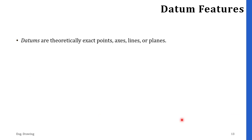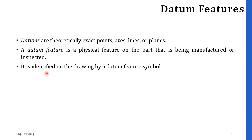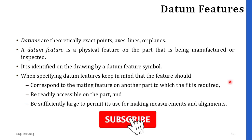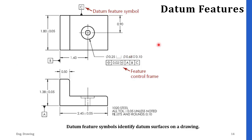Datums are theoretically exact points, axis lines, or planes. A datum feature is a physical feature on the part that is being manufactured or inspected. It is identified on the drawing by a datum feature symbol. When specifying the datum feature, you should keep in mind the following: it should correspond to the mating feature of another part to which the fit is required, and it should be readily accessible on the part or be sufficiently large to permit its use for maintaining measurements and alignments.